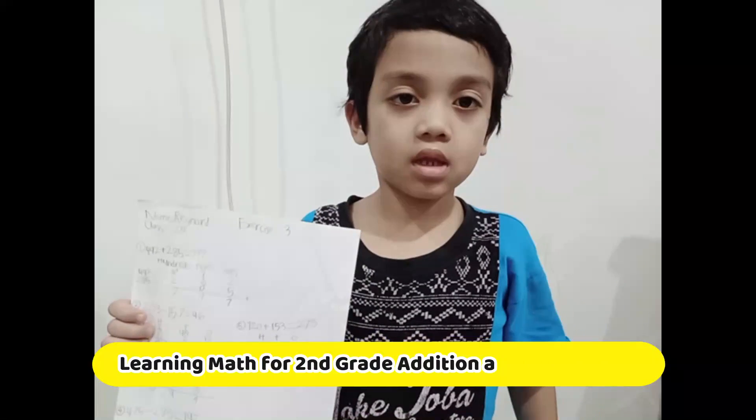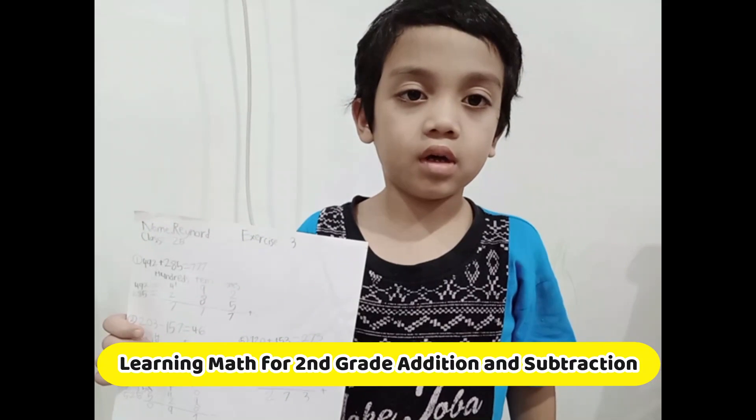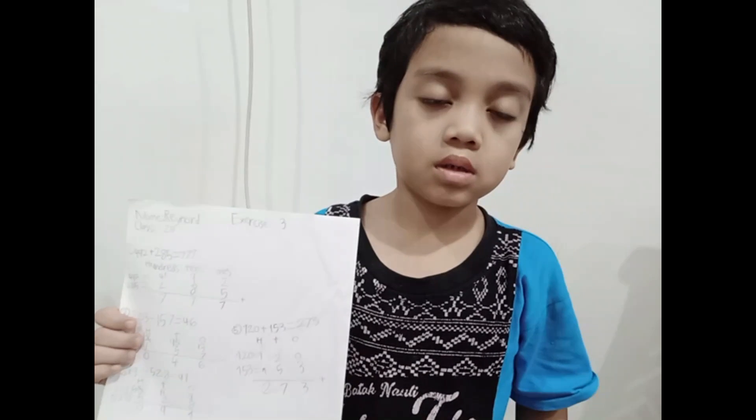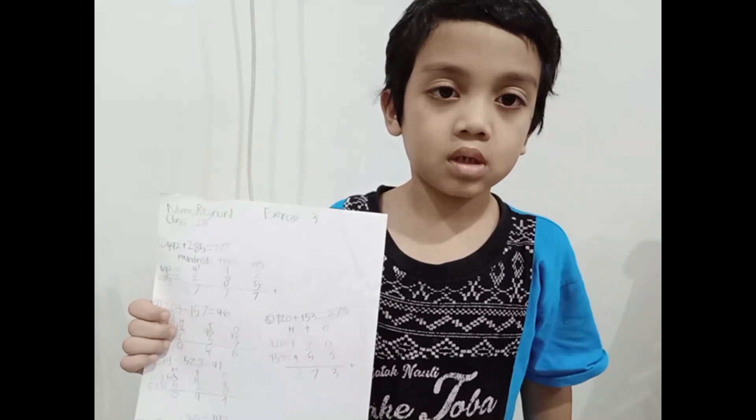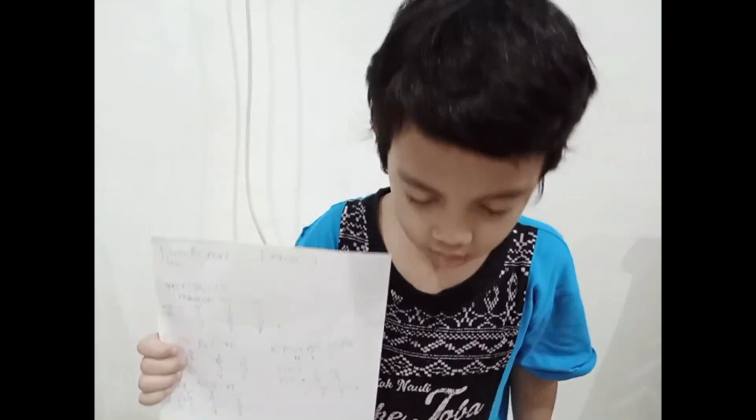Hello, my name is Reynard. I'm in primary 2B. I've done my mathematics homework exercise 3. It's about subtraction and addition with regrouping by using striking down counting way. Please check my video until the end. Thank you.